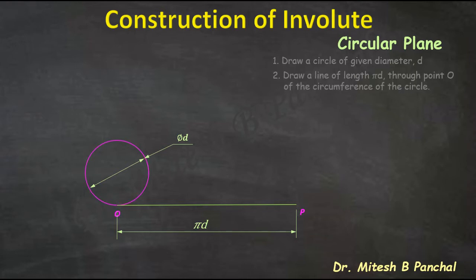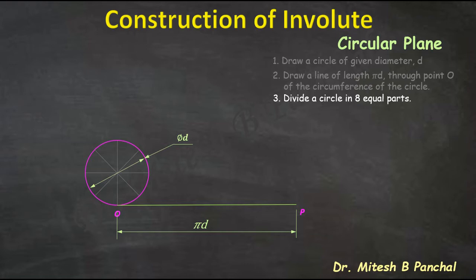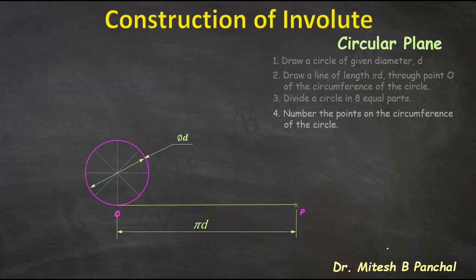In the next step, we will divide the circle into eight equal parts. To do this, we consider the vertical diameter, the horizontal diameter, and then draw a line at an angle of 45 degrees. By this way we can divide the circle into eight equal parts, meaning we have divided the circumference into eight equal parts. Now we will number all these points on the circumference in anticlockwise direction: 1, 2, 3, 4, 5, 6, 7, 8.